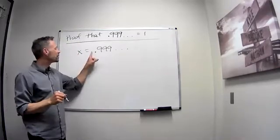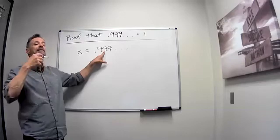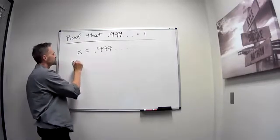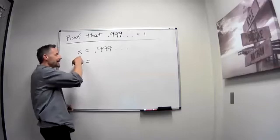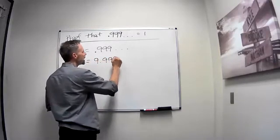And then what I want to do is multiply this by 10 to get the decimal so it's 9.999 repeating. So I'm going to say 10 times that, 10x is going to be 9.999 repeating.